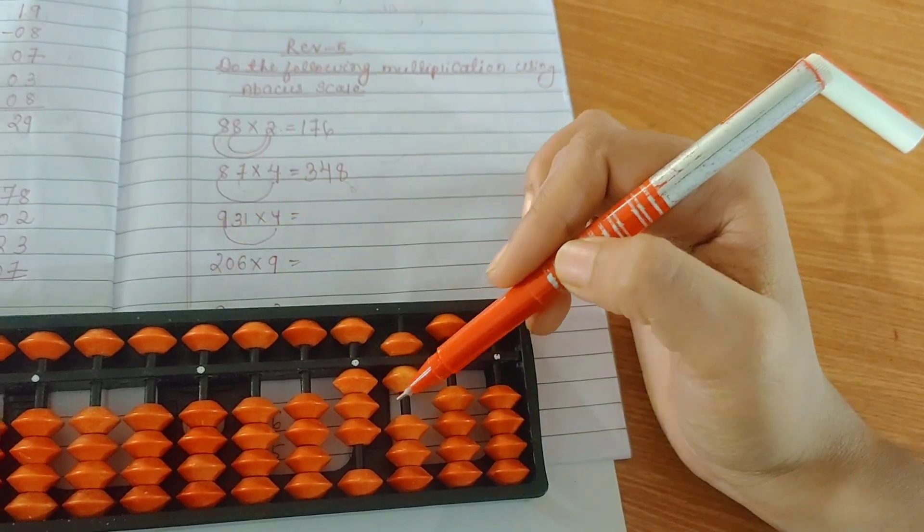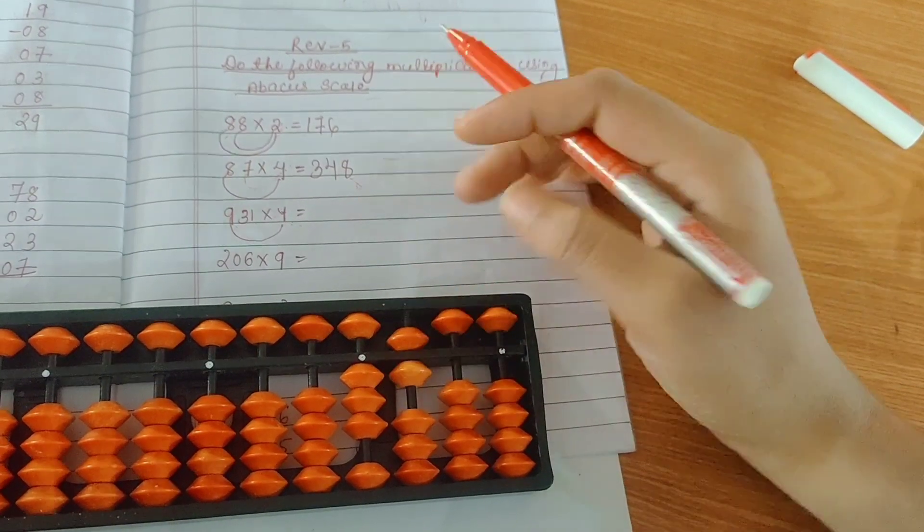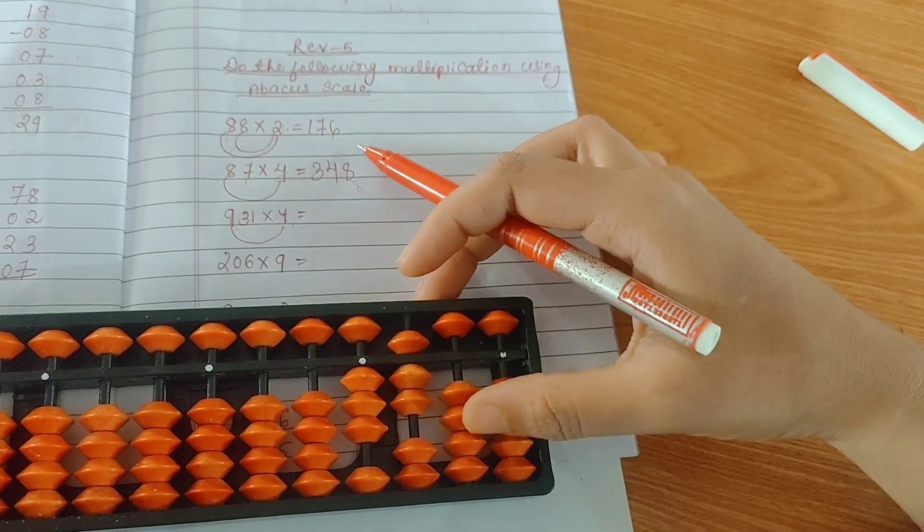Now you're multiplying the next number, so you will start from the next row. That means second row, skipping the first row. 4 times 3 is 12.